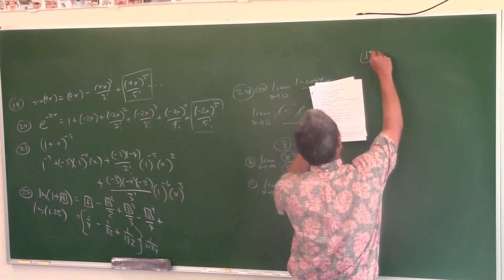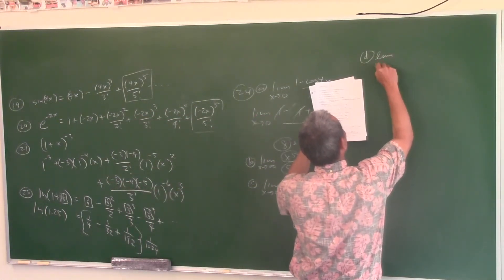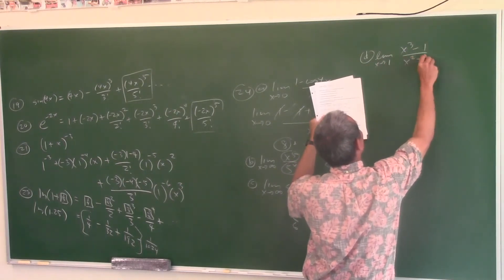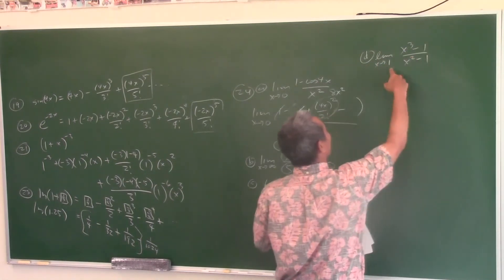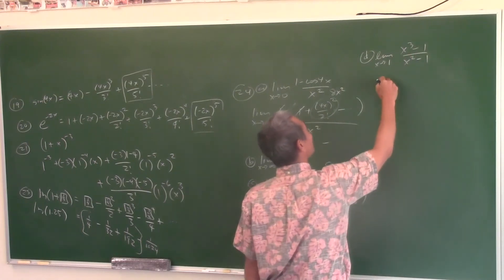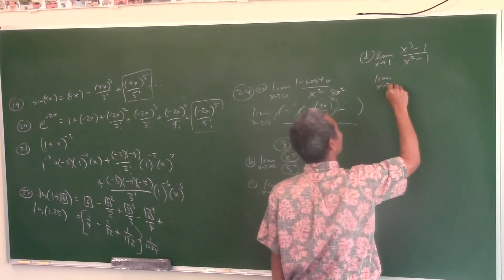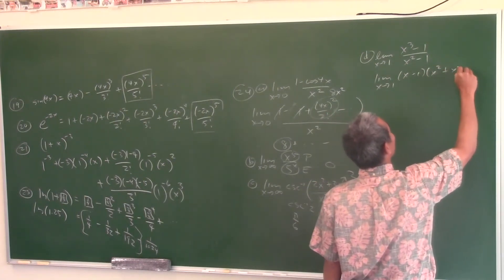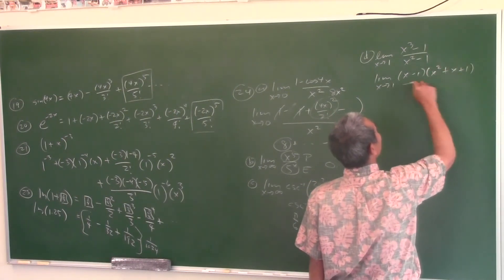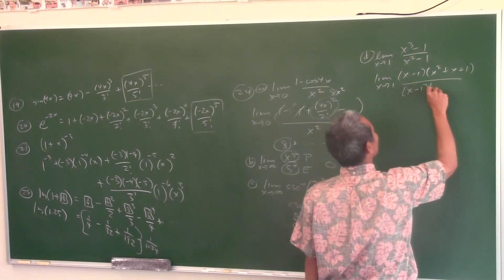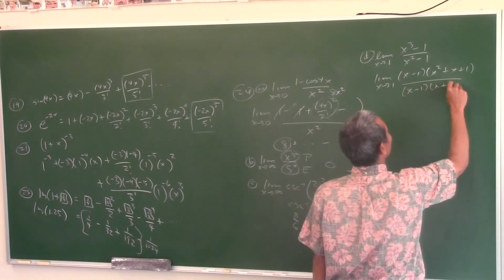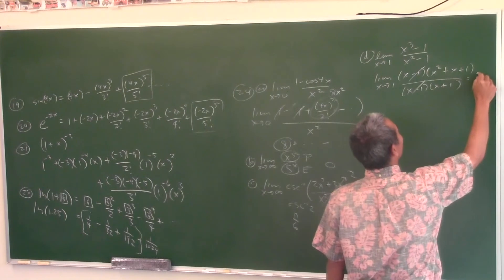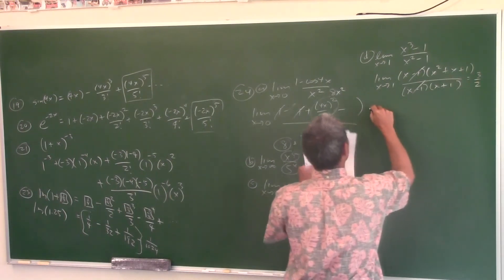Limit as x approaches 1 of (x³ − 1)/(x² − 1). Plugging in 1 gives 0/0, indeterminate. Factor using difference of cubes (or synthetic division if needed). After factoring, the common factors cancel, and you can plug in x = 1 to get 3/2.